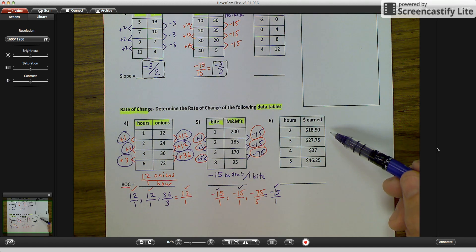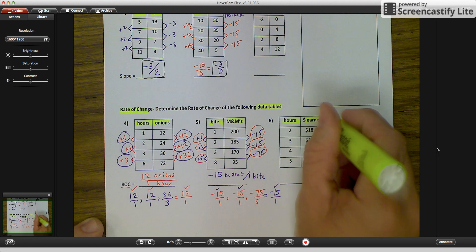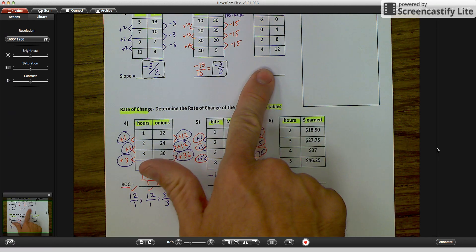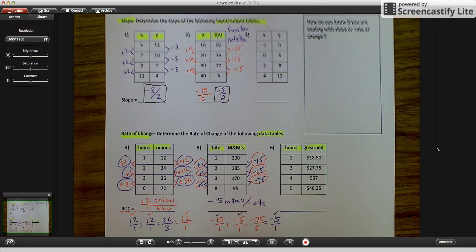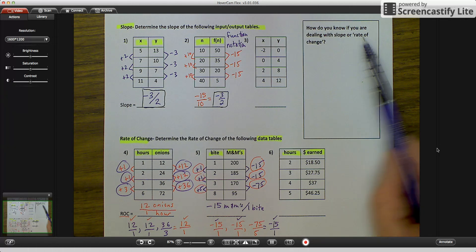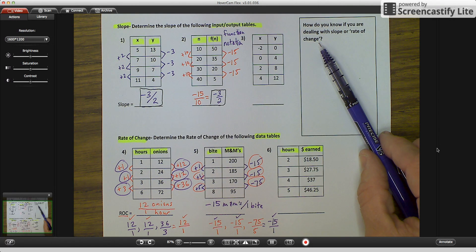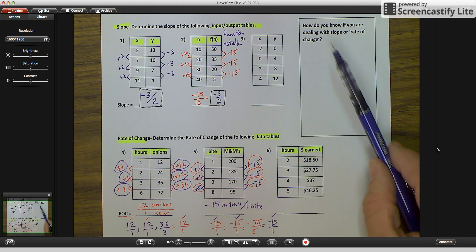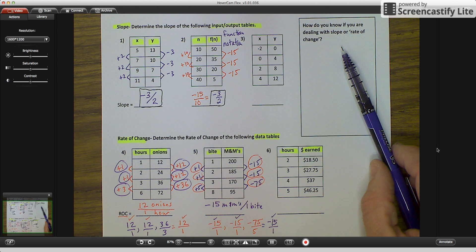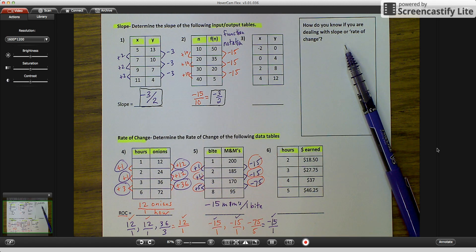Right now, I would like you to try to figure out what your rate of change is for hours and dollars earned. Figure out the slope up here if you haven't already. And then I want you to answer the question, how do you know if you are dealing with slope or rate of change? If you didn't catch it, I talked about it during the video. So watch the video back again and come up with your answer for how do you know if you're dealing with slope or rate of change. Tomorrow in class, we will go over these three questions. I will see you tomorrow. Have a great night.